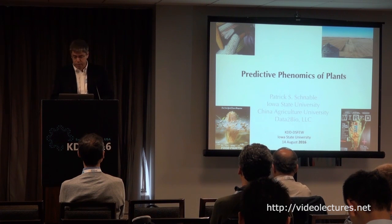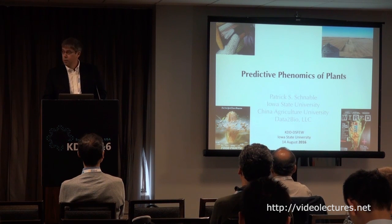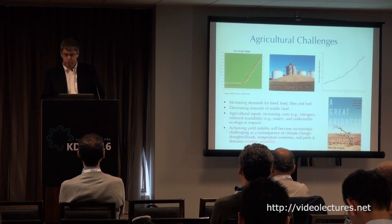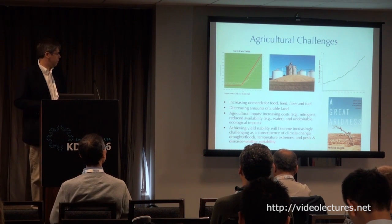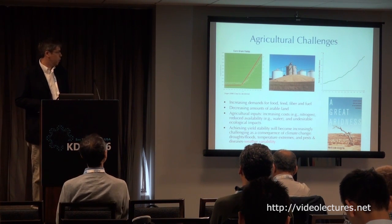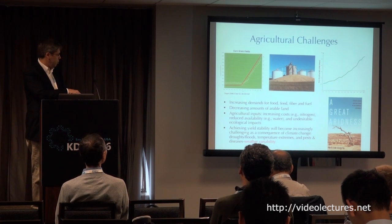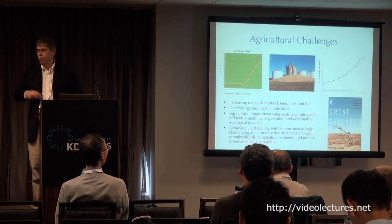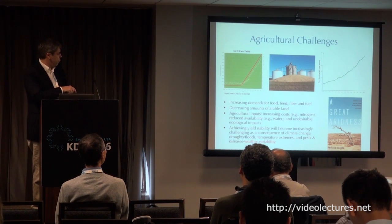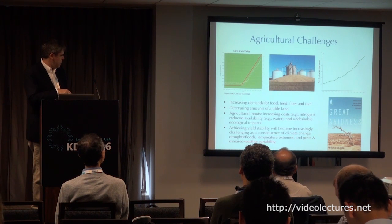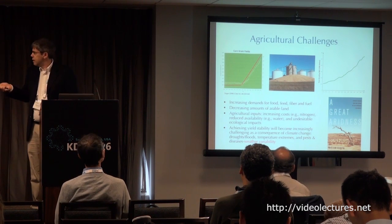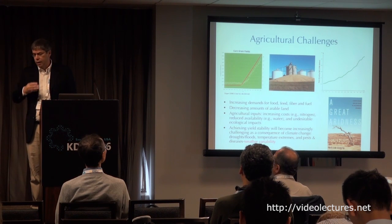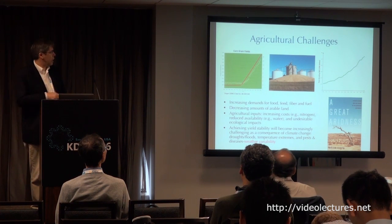I am going to talk about predictive phenomics of plants. I want to begin with the agriculture challenges. This first plot in the upper left is a plot of grain yield — corn grain yield over time. I've simplified multiple regressions here with a red line overlaid. Starting up until the 1930s, corn yield didn't go up at all. It wasn't that people weren't trying, but they didn't have appropriate field plot designs or statistics.